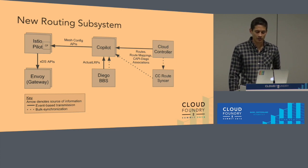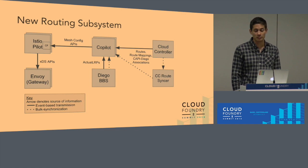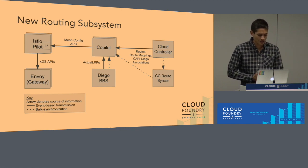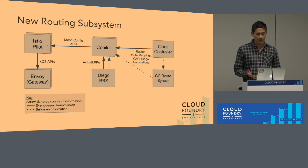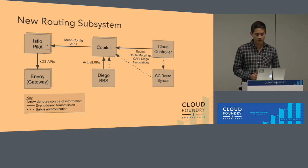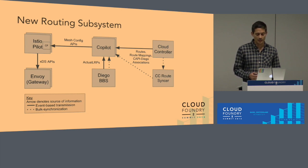Shannon touched on a lot of the product value we're getting out of our new routing subsystem. I'm going to talk about some implementation details and engineering benefits, as well as our experience with the Istio community. We have an Envoy configured in gateway mode so that ingress traffic at the edge of the cloud goes through this Envoy. This Envoy receives its configuration from Pilot through the Envoy V2 XDS API — a bi-directional gRPC stream. Pilot itself receives its config information from Copilot, a component that the routing team has created.